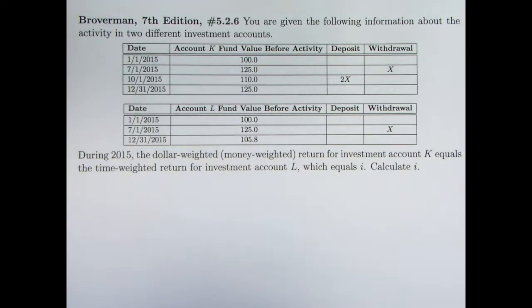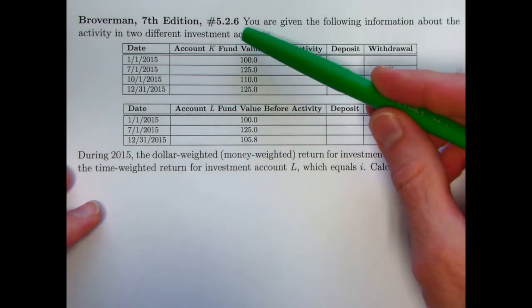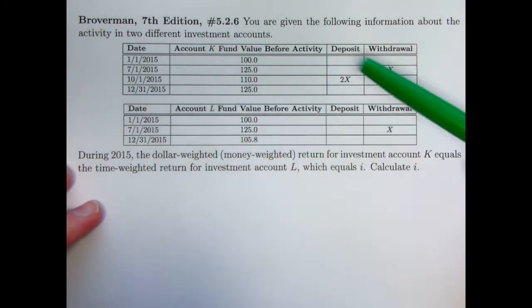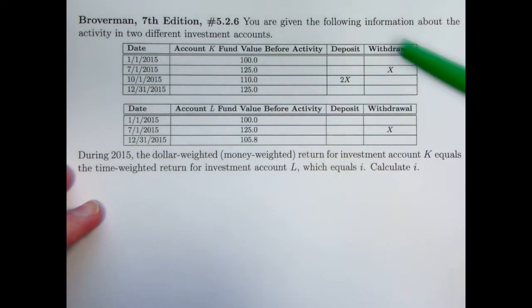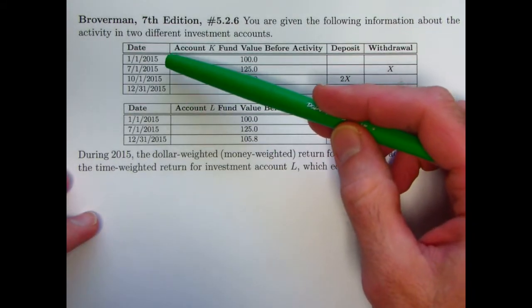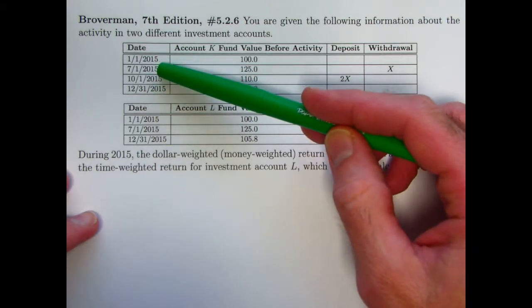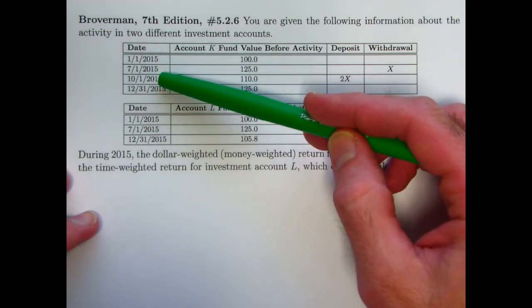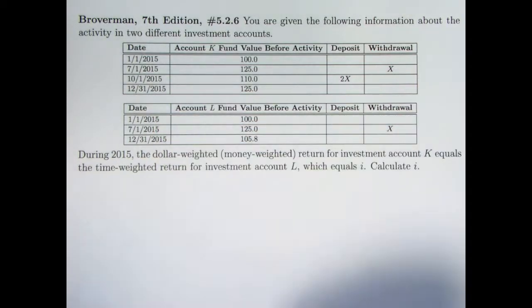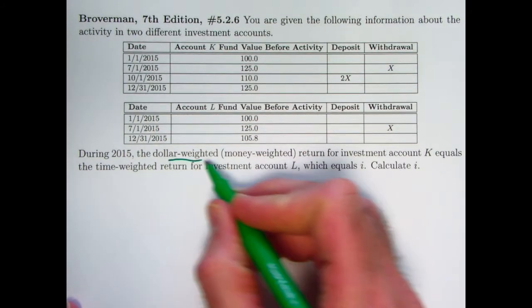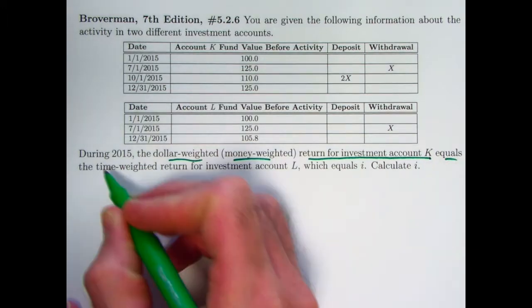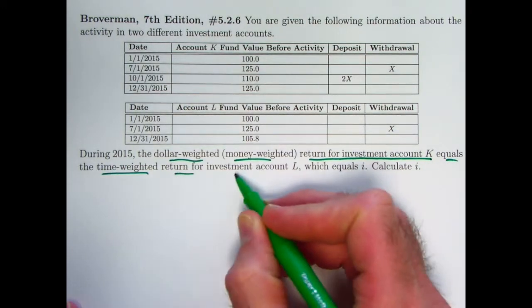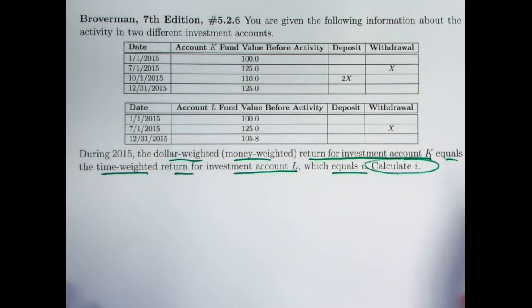So here's the situation. You're given the following information about two different investment accounts, account K and account L. Both account fund value before given activities of withdrawals or deposits. Over the course of a year, 2015, you can see these dates here. This is halfway through the year. This is three-quarters of the way through the year. During 2015, the dollar-weighted return for investment account K equals the time-weighted return for investment account L, which equals i. The goal is to calculate i. And again, the algebra ends up being a bit nasty, so we have to be careful here.